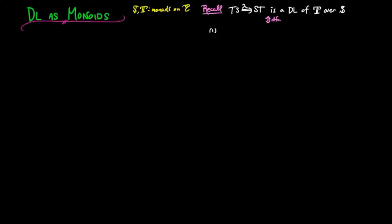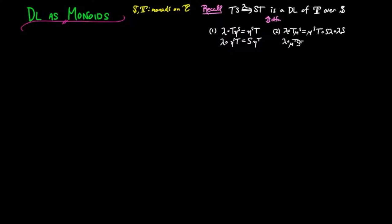if and only if: One, lambda T eta S is equal to eta S T, and lambda eta S T is equal to S eta T. And two, lambda T mu S is equal to mu S T, S lambda, lambda S, and lambda mu TS is equal to S mu T, lambda T, T lambda.